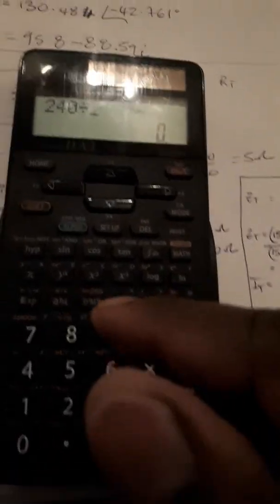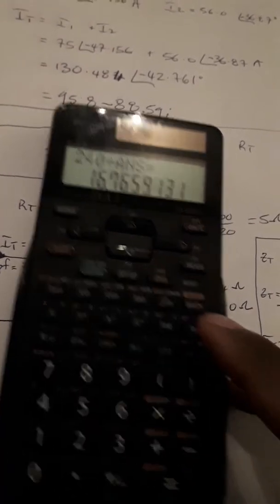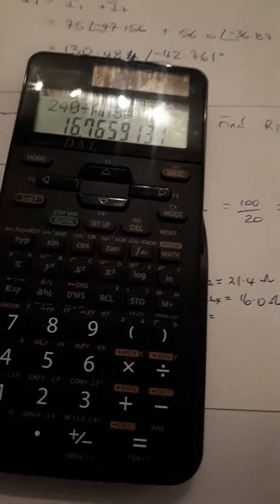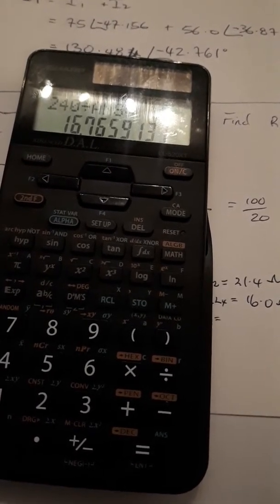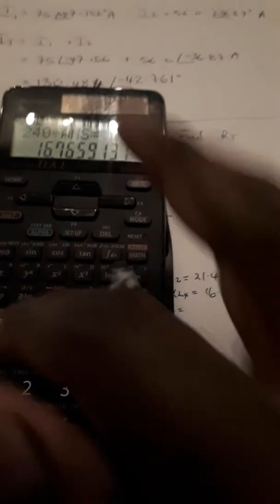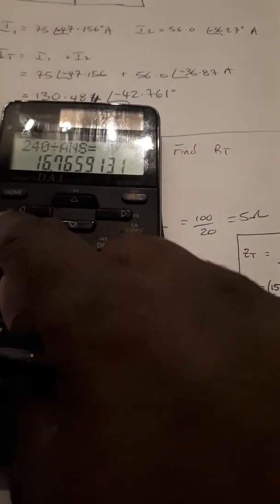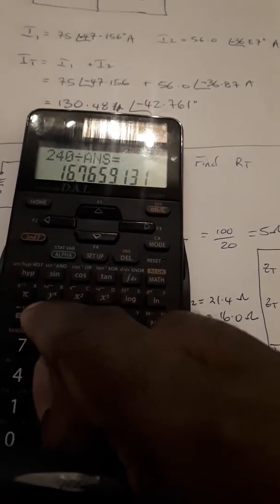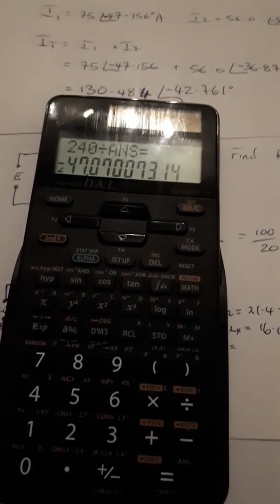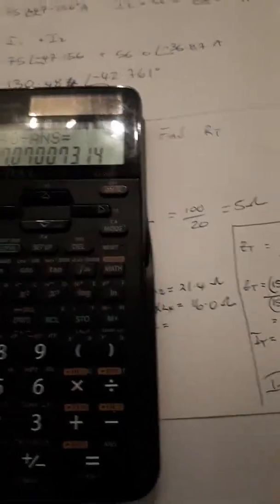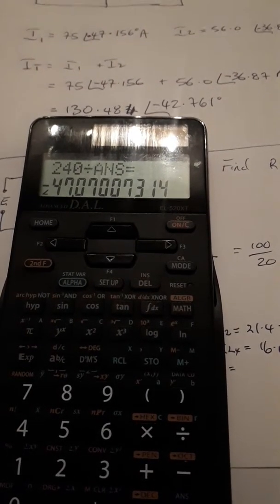So without doing anything else we can go ahead and just plug in 240, which is the supply voltage, divided by alpha, the answer. And there you go, IT is equal to 16.766 at an angle of minus 47.07 degrees.